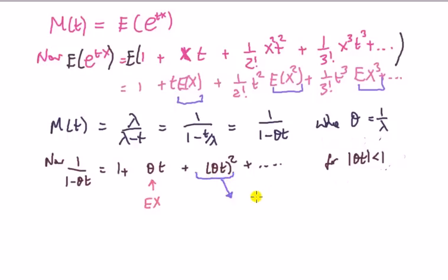Let's split them up. We've got θ² and t². If I divide by 2! and multiply by 2! above, that's 2θ² × (t²/2!). This must be the second moment: E(X²) = 2θ². Substituting for θ, that's 2/λ², which we showed previously.